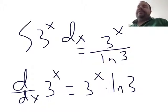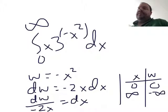Alright, so let's do a w-substitution example with some infinite limits using 3 to the x. So here you see this example. This is the integral from 0 to infinity of x times 3 to the negative x squared dx.